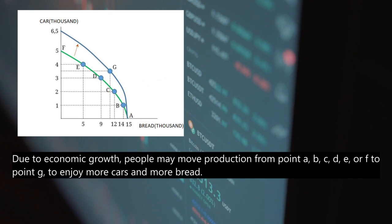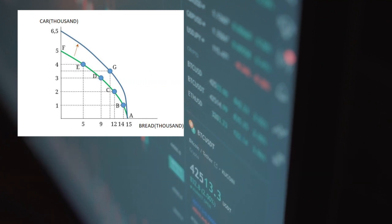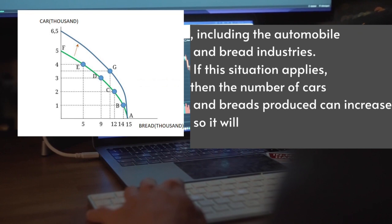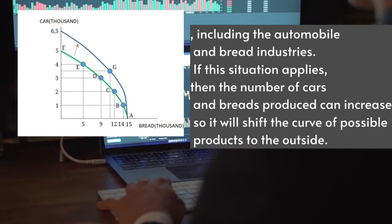Due to economic growth, people may move production from point A, B, C, D, E, or F to point G, so as to enjoy more cars and more bread. But in reality, technological advances can occur in all sectors simultaneously including the automobile and bread industry. If this situation applies, then the number of cars and bread produced can increase, so it will shift the curve of production possibilities to the outside.